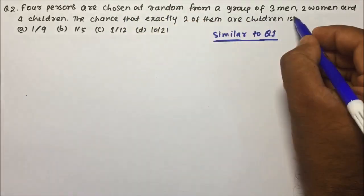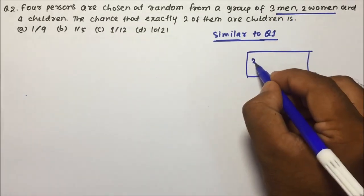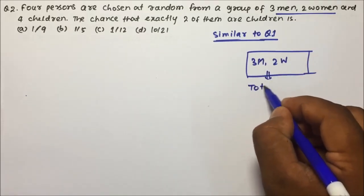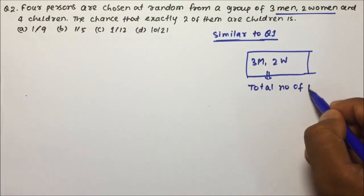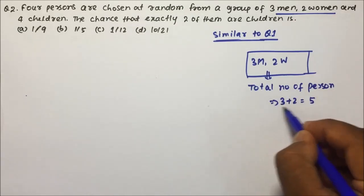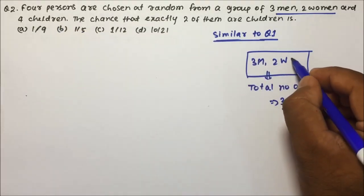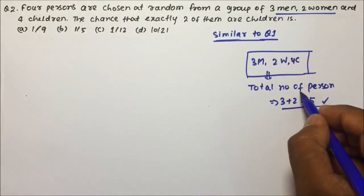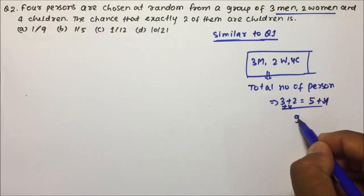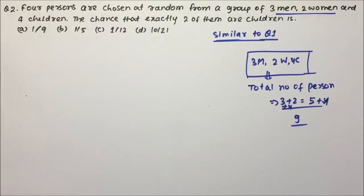4 persons are chosen at random from a group of 3 men, 2 women, and 4 children. Total number of persons will be 3 plus 2 plus 4, which is 9. So total number of persons is 9, consisting of 3 men, 2 women and 4 children.